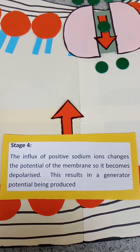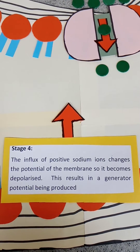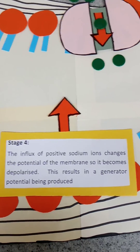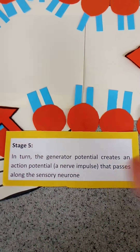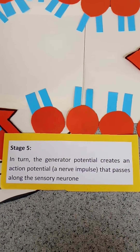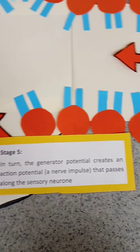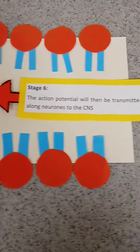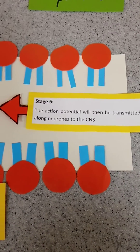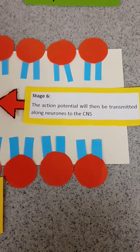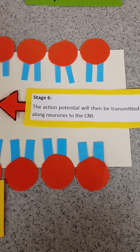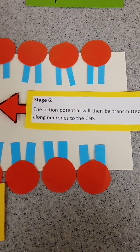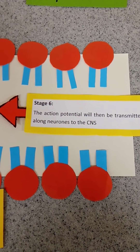It's that depolarisation that generates the generator potential. This generator potential is then passed further down the nerve cell in the form of an action potential until it eventually reaches the central nervous system. So that's a very quick summary of how generator potentials in sensory neurons are generated.